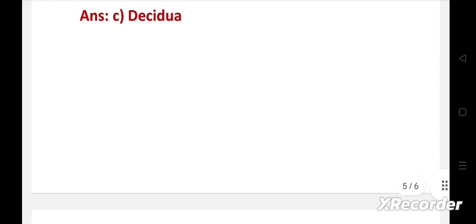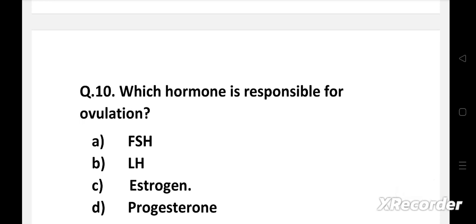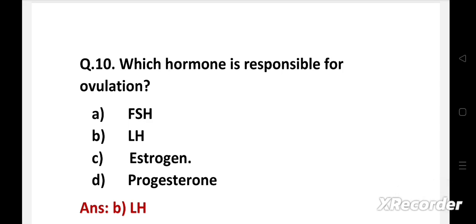Next question. Which hormone is responsible for ovulation? Option A: FSH (follicle stimulating hormone), B: LH (luteinizing hormone), C: estrogen, D: progesterone. Right answer is option B: LH. Luteinizing hormone is produced by gonadotropic cells in the anterior pituitary gland. In females, an acute rise of LH triggers ovulation and development of the corpus luteum. FSH is responsible for follicle maturation.